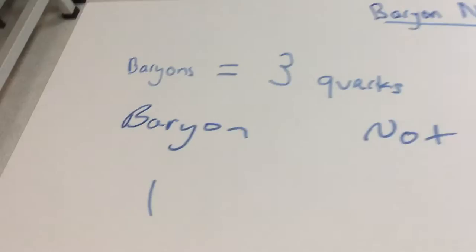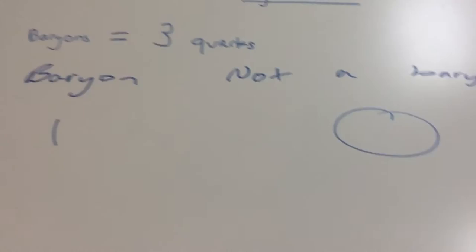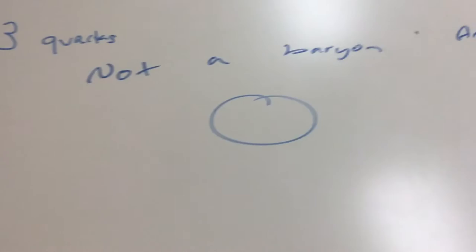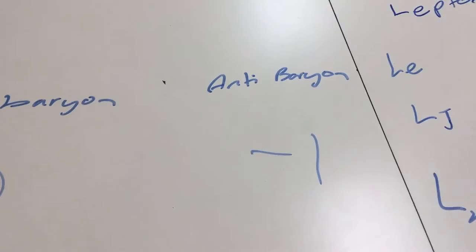Right, so let's go on to baryon numbers. Just a reminder, a baryon equals three quarks. So like the lepton number, it has to be balanced as well. So we write one if it is a baryon, zero if it's not a baryon, and minus one if it's an anti-baryon.